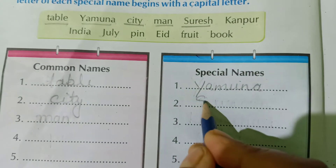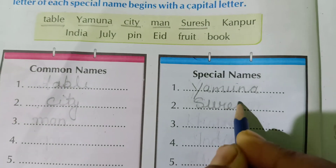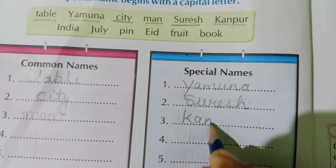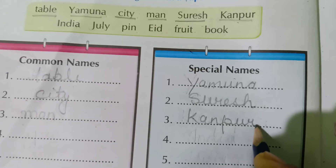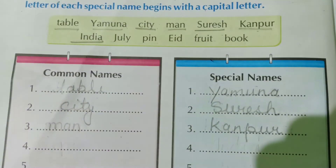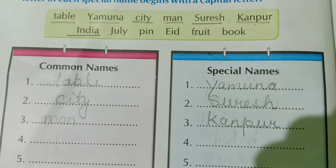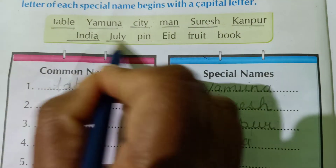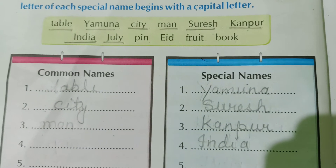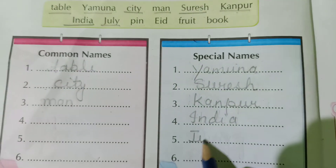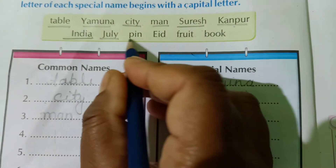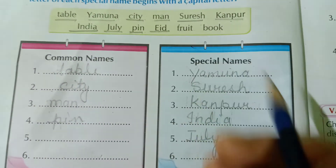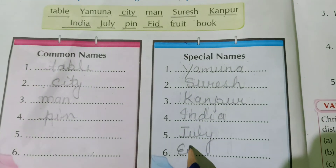Suresh — Suresh is a special name of a boy, so write here 'Suresh'. Next is Kanpur — Kanpur is a special name of a place, so write here 'Kanpur'. India — India is a special name of a country, so write here 'India'. July — July is a special name of a month, so write here 'July'. Pin is a common name, so write here 'pin'. Eid — Eid is a special name of a festival, so write here 'Eid'.